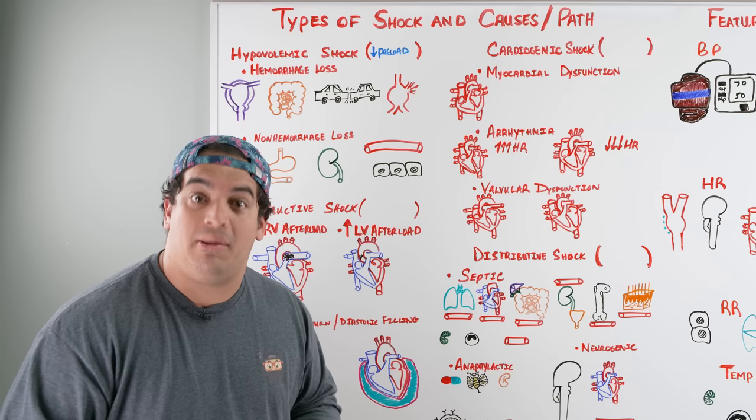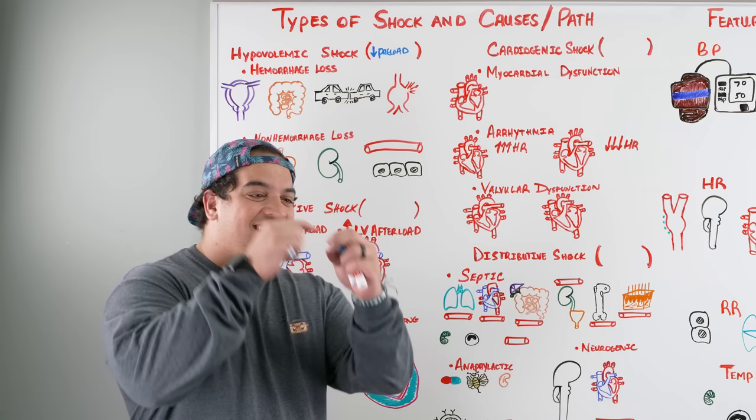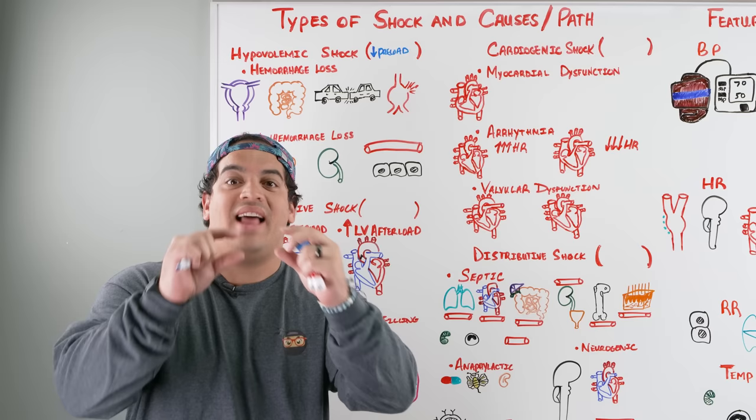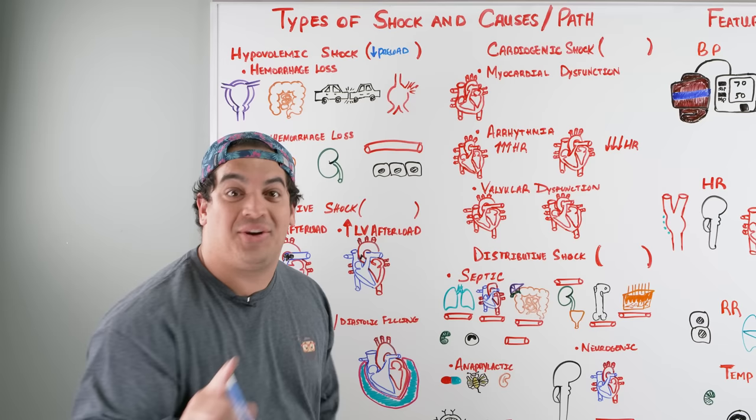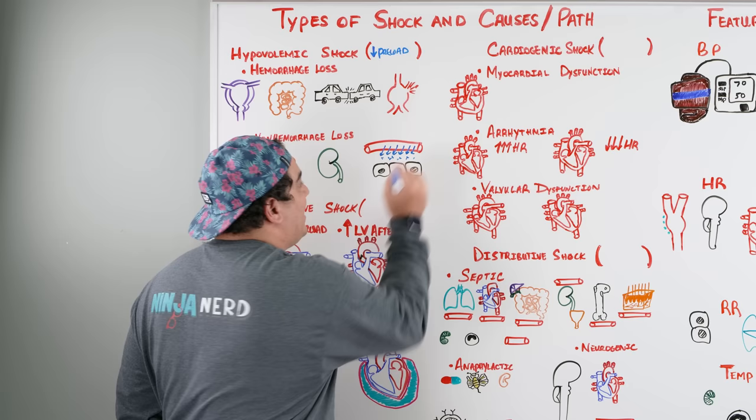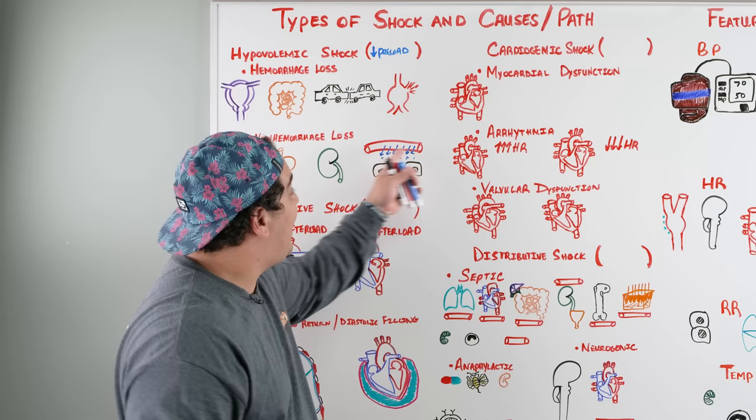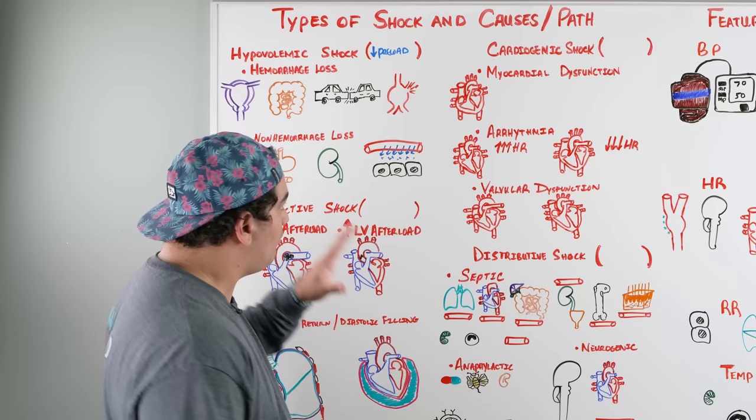High-dose diuretics can cause urinary volume loss. Additionally, in inflammatory states like pancreatitis, fluid can leak out of vessels into interstitial spaces — this is called third spacing. The fluid is no longer in the vessel, which reduces preload. That covers hypovolemic shock.